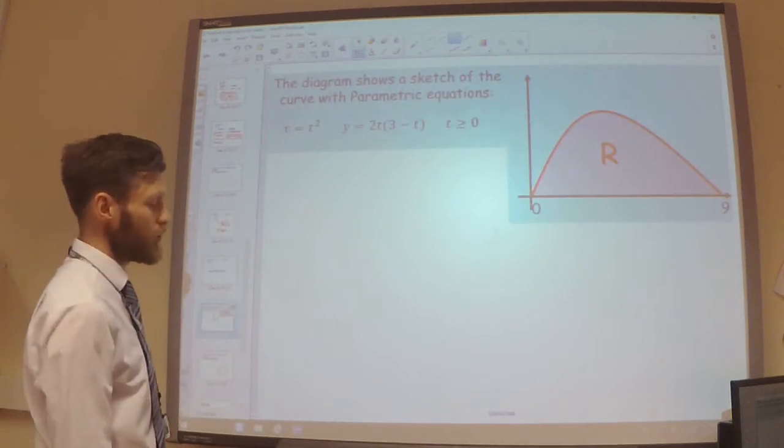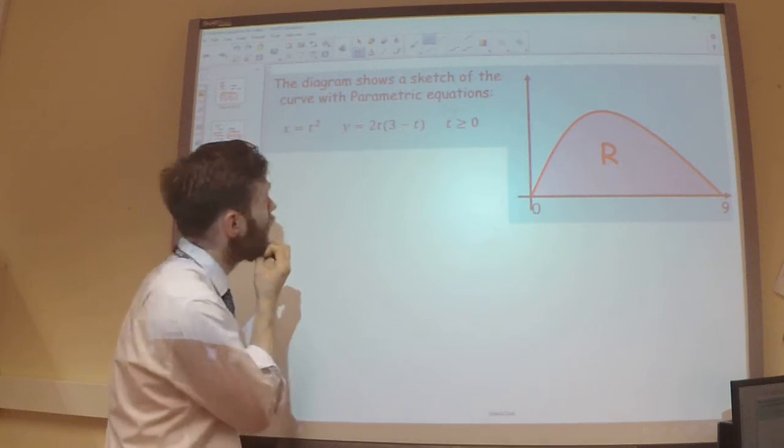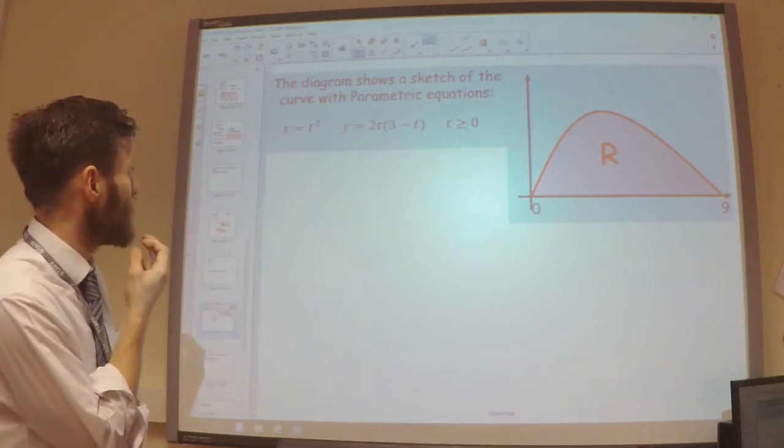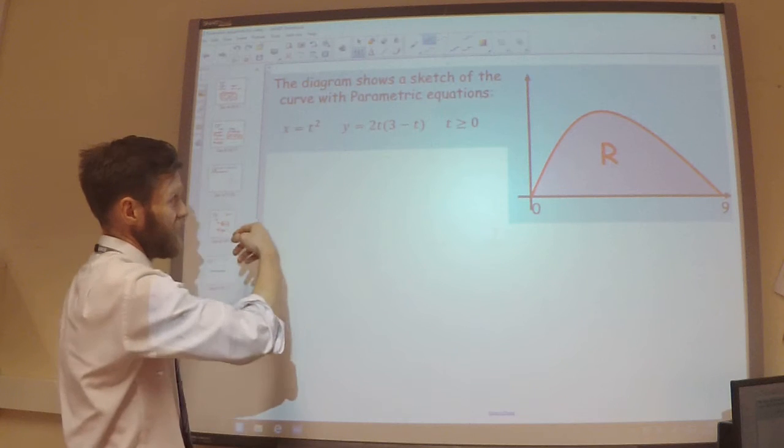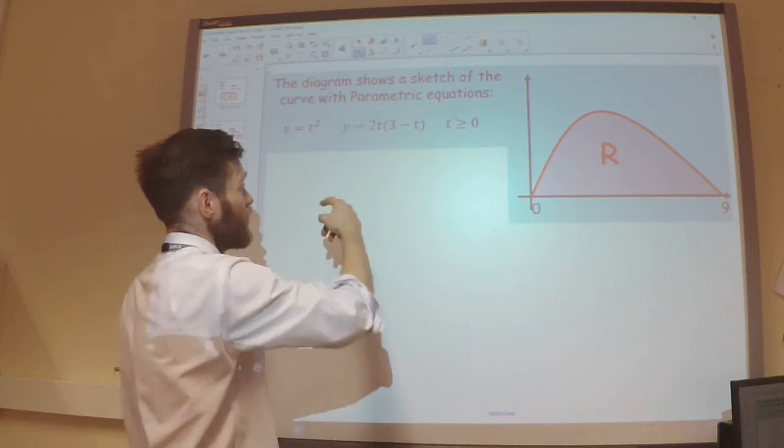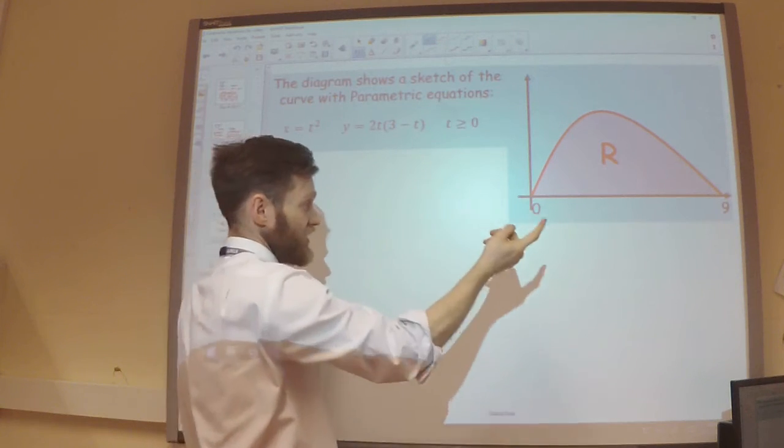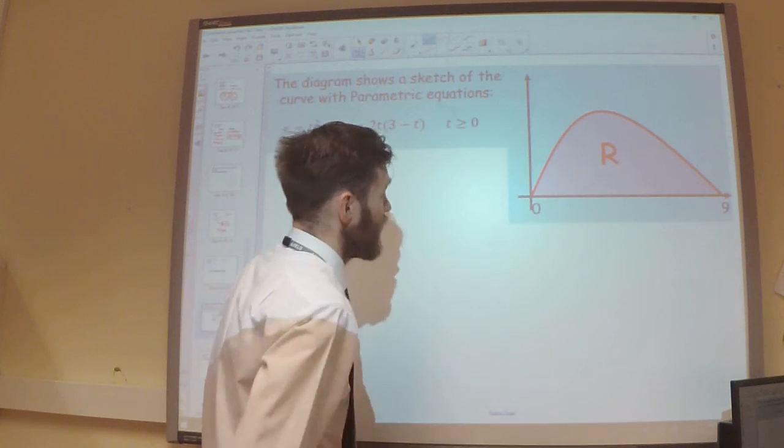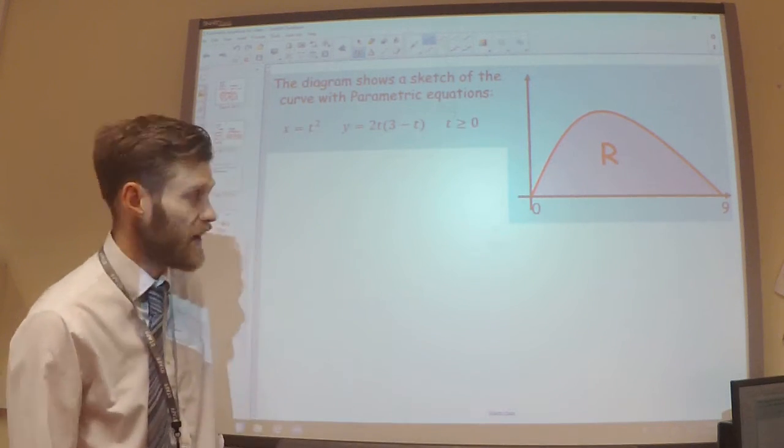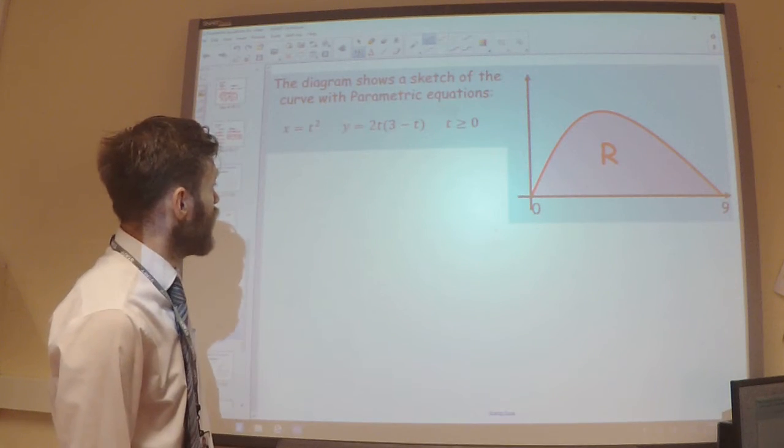So let's have a look at an example. This example here, where we have x is t squared, y equals 2t multiplied by 3 minus t, and t is greater than 0. And we have our sketch over here.